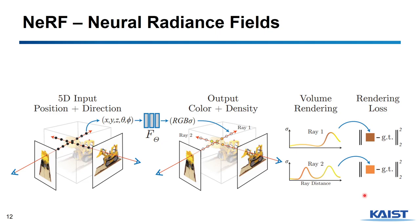Here is the network architecture of NeRF. A multilayer perceptron is used to predict the radiance field values. The input of the MLP is position and direction, and the output will be the RGB value and transparency. If we train the MLP, we can generate an image from a desired view through volume rendering, and the training uses a rendering loss between the generated image and the ground truth image.